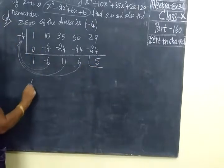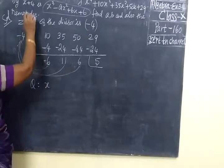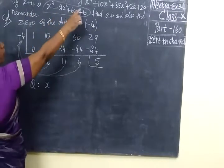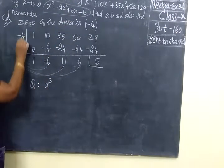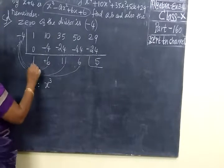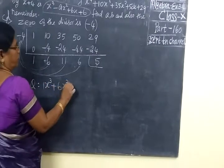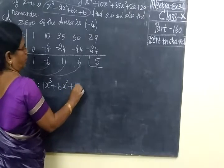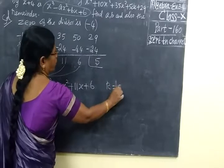So what is the quotient? The quotient is X, where the power is 4, so you start it as X cube. So 1X³ plus 6X² plus 11X plus 6, with remainder 5.